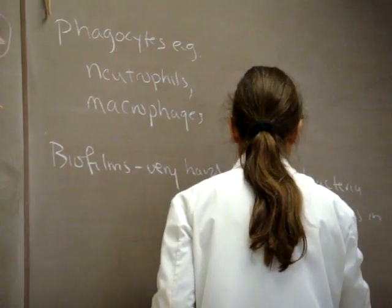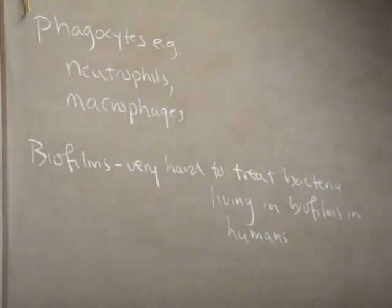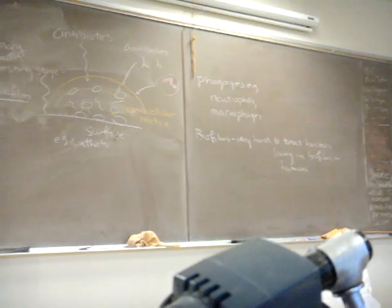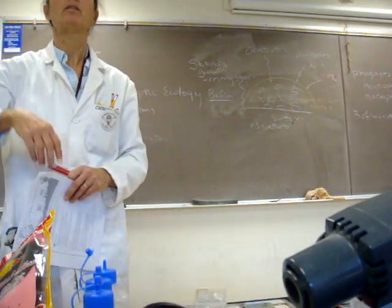So it's very hard to treat bacteria living in biofilms in humans. So often what happens, for example, a classic example is somebody that has an artificial hip joint. And sadly, these often become infected with staphylococcus aureus, and the staph starts living in these biofilms.